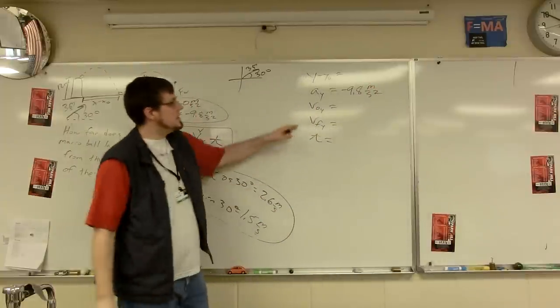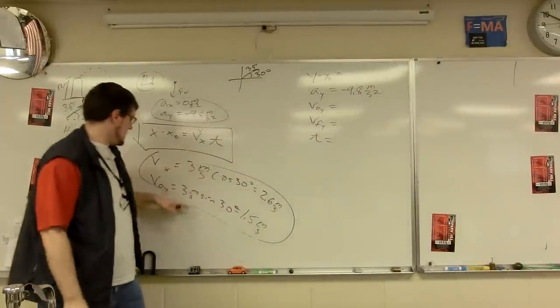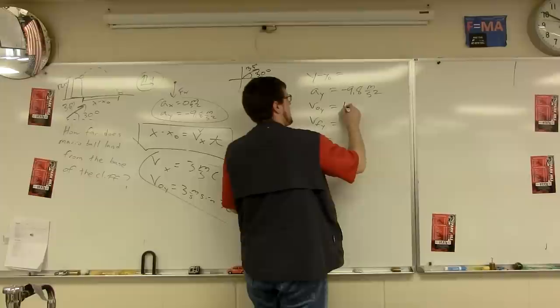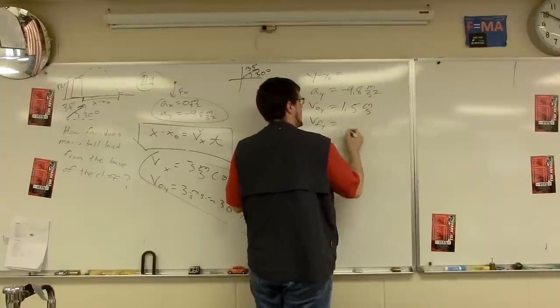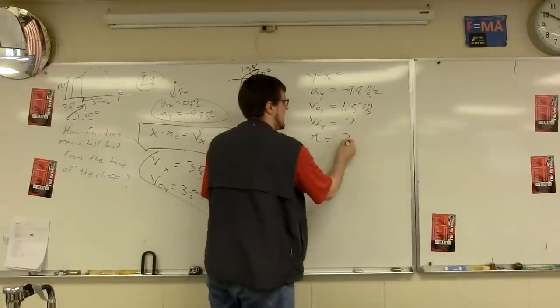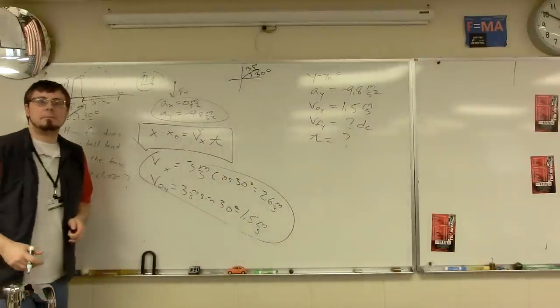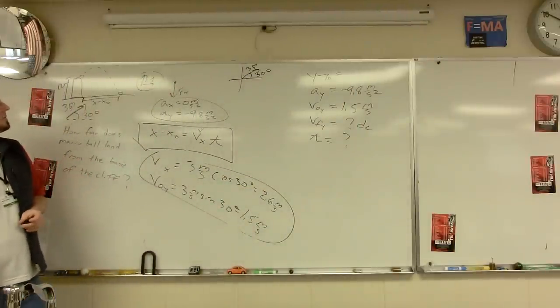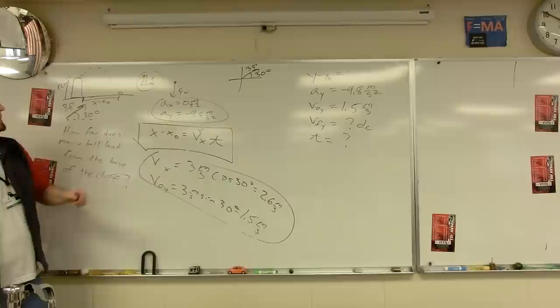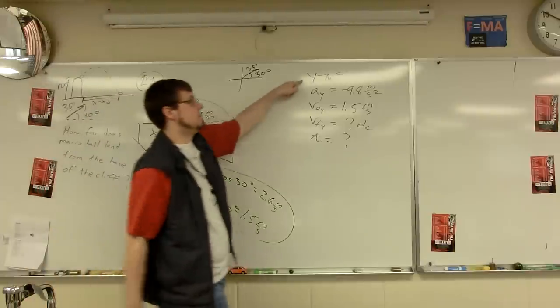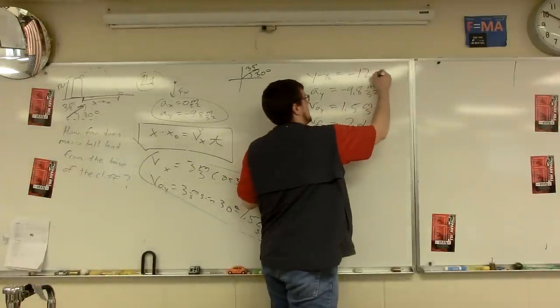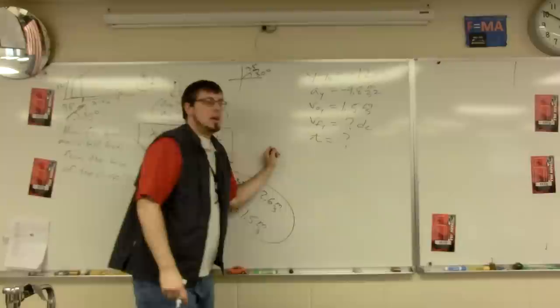So acceleration of the Y is negative 9.8. We're in free fall in the Y direction. Initial velocity in the Y, it's right here, 1.5. V final in the Y, don't know. Time, don't know. Don't care about that. What's my displacement in this problem? 12 meters. Almost. Negative 12 meters because I call up and right positive. This is a vector. So negative 12 meters.